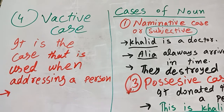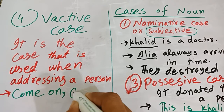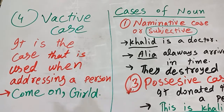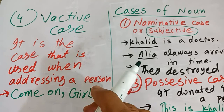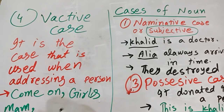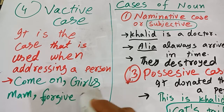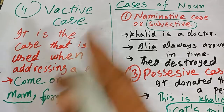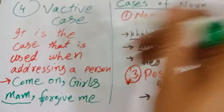For example: Come on, girls. He is addressing a girl, so 'girls' is in the vocative case. Similarly, Ma'am, forgive me — someone is addressing a ma'am. He can address a thing or a person. So it is the vocative case.